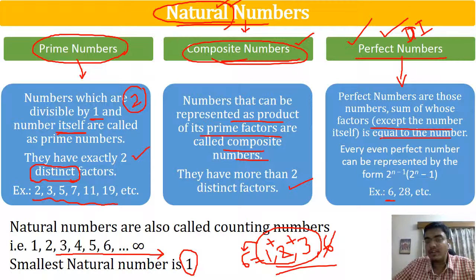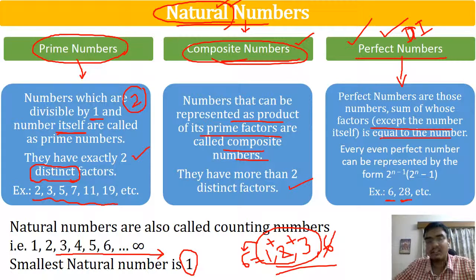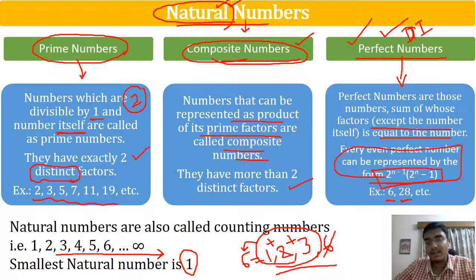Similarly, if you take 28, you get a perfect number again. You have 1 plus 2 plus 4 plus 7 plus 14, which equals 28. If you want to calculate other perfect numbers, there is a formula for even perfect numbers: 2 to the power (n−1) multiplied by (2 to the power n minus 1). These are some even perfect numbers that you can calculate.